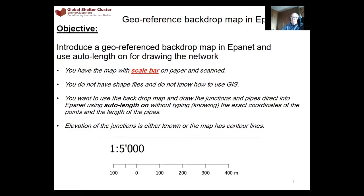Additionally, you want to use EpaNet with auto-length turned on. During the first two webinars, we worked with auto-length off, meaning we had to manually give the length of each pipe. If you put auto-length on, you draw the pipe and the length will automatically be estimated. Of course, the other information — elevation, water demand, pattern — you still have to give manually for each element.